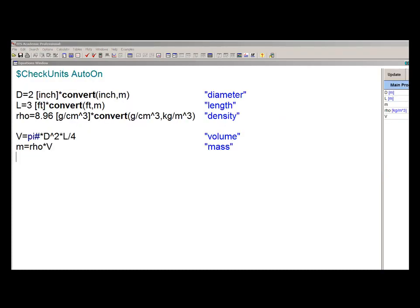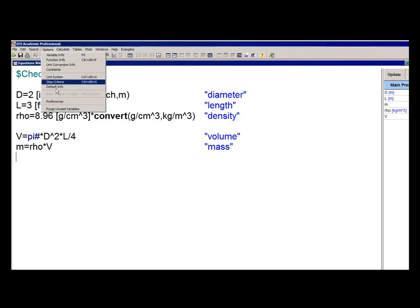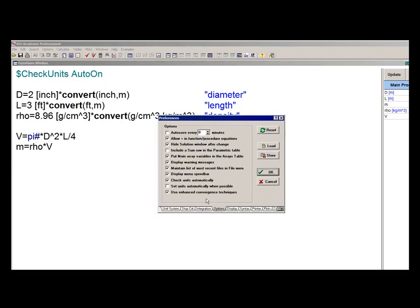If you want to activate this option, you go to the Options tab of the Preferences window and you select Set Units Automatically here.